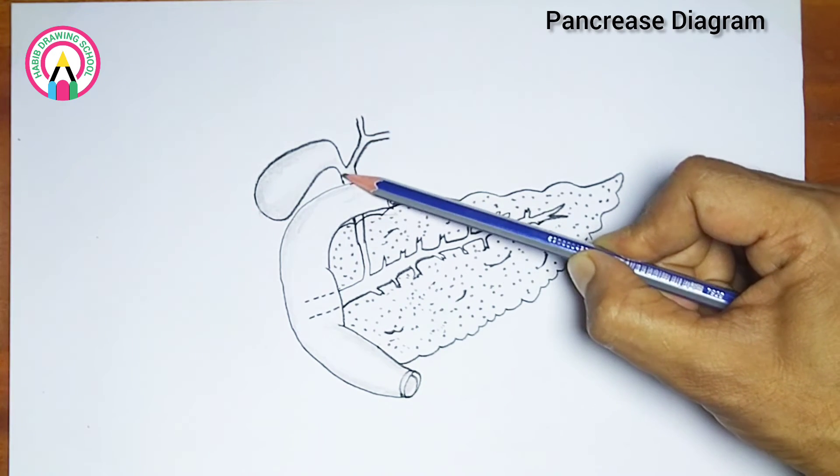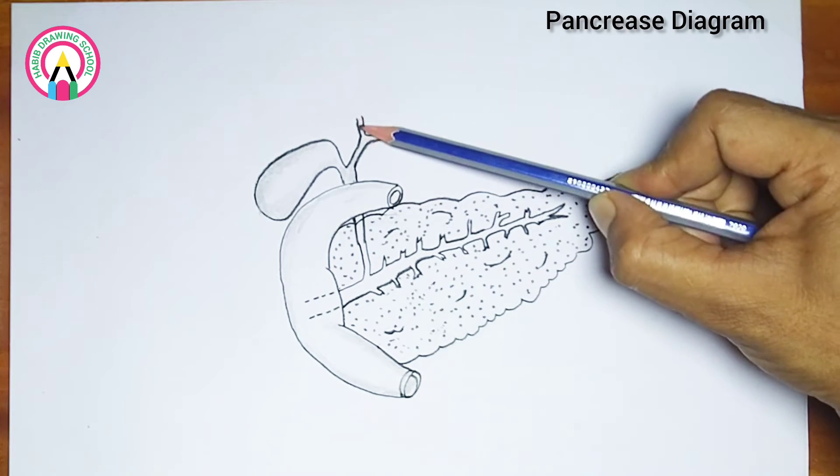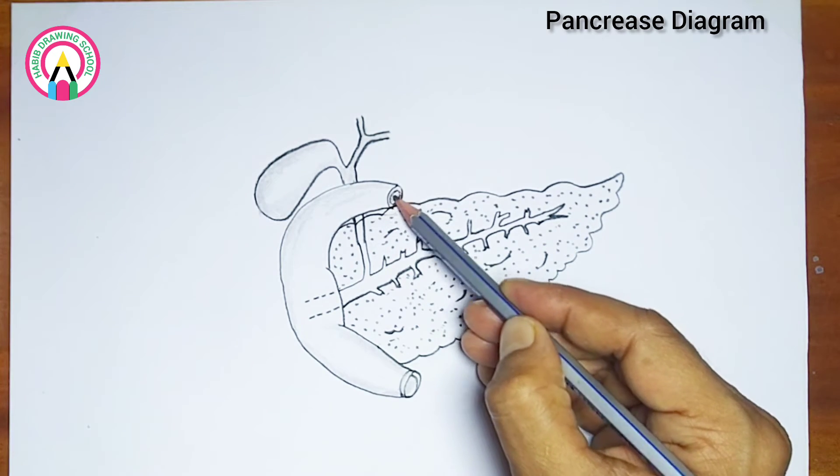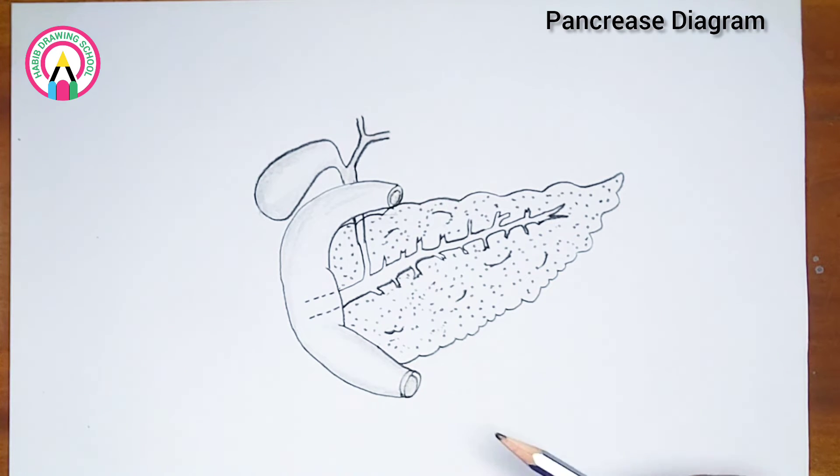Here are some additional details about the pancreas. One: islets of Langerhans - these are clusters of cells scattered throughout the pancreas that are responsible for producing hormones.